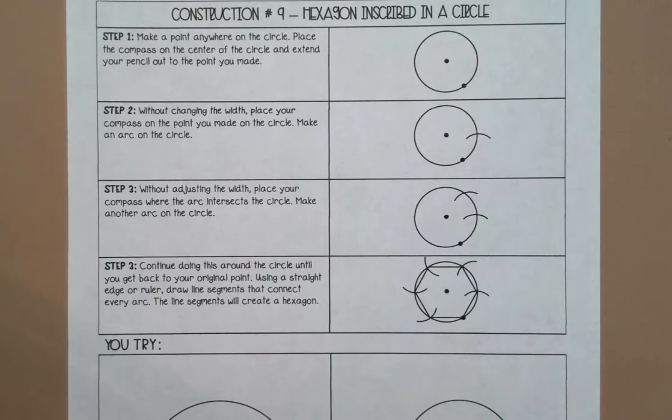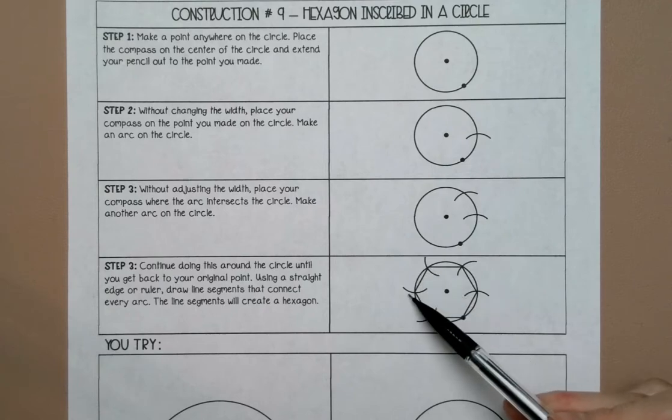Welcome to this lesson on constructing a hexagon inscribed in a circle. This is going to be the exact same steps as an equilateral triangle in a circle. The only difference is at the end, we're going to connect every consecutive point instead of every other point.